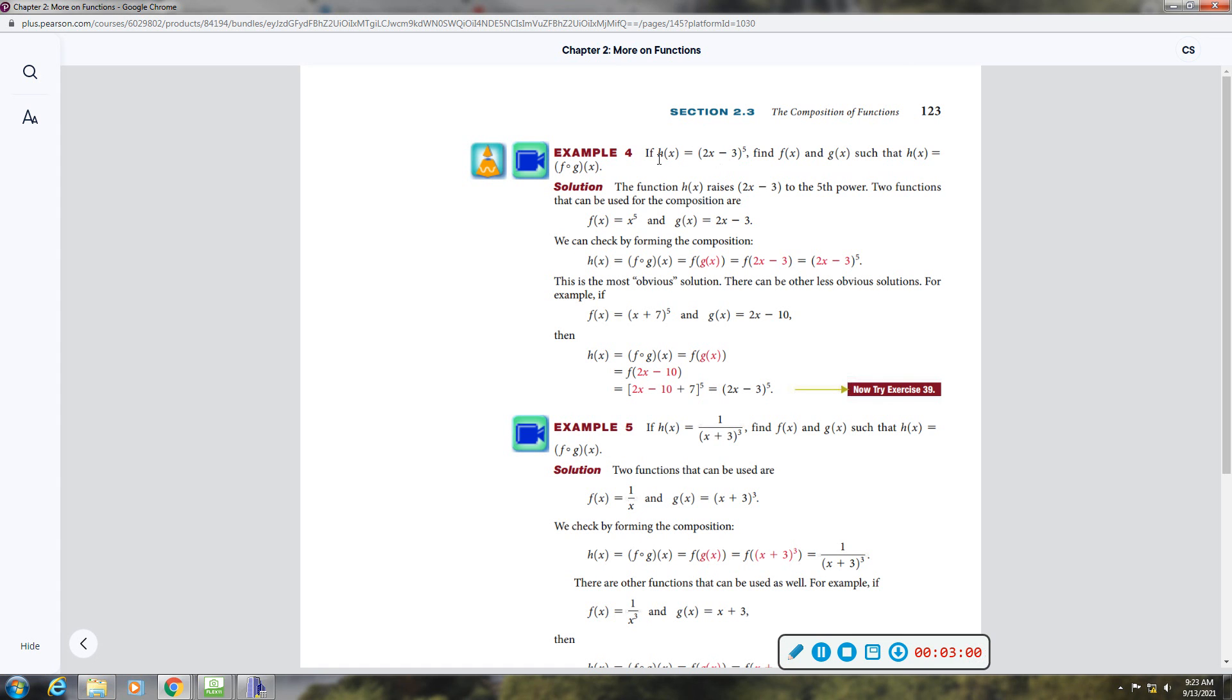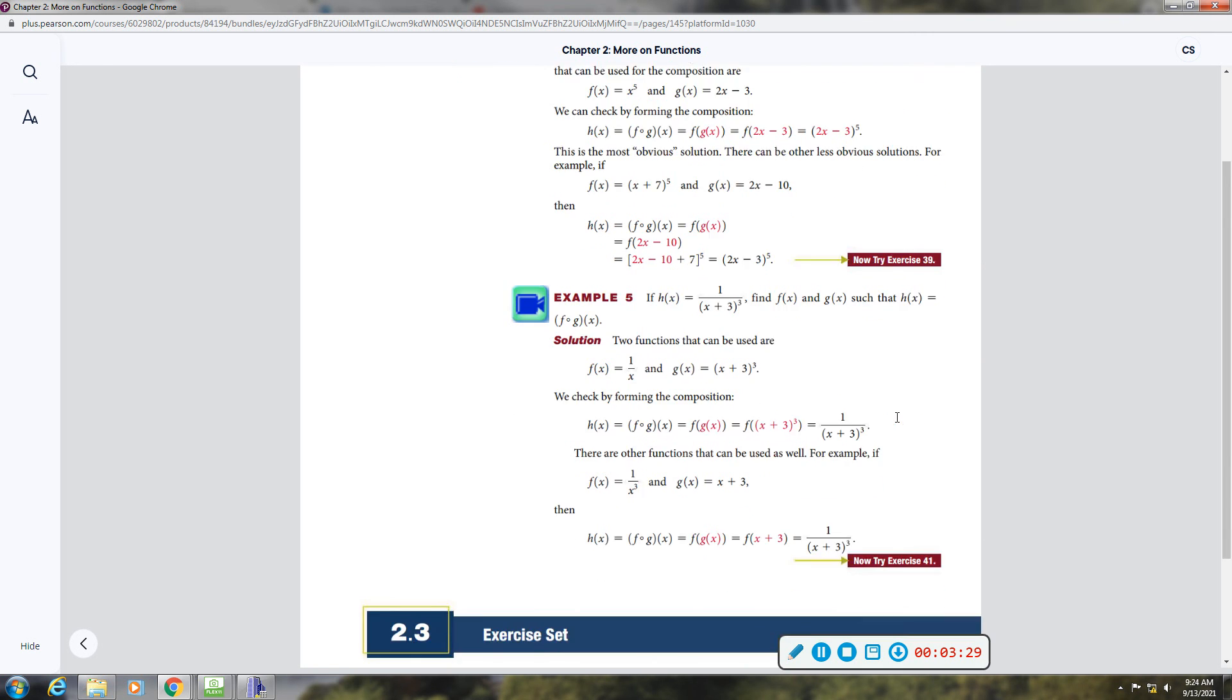So what they're doing is they're showing you, okay, H of X is the composition of F and G. Can you tell me what F and G were, or give me two possibilities? So what we're doing, this function says raises this to the fifth power. So two functions that could work would be X to the fifth, and then you plug in 2X minus 3 to X to the fifth, and you get this. So that's one way, and as you go through these examples, I think they might show you another way of writing something similar to that.